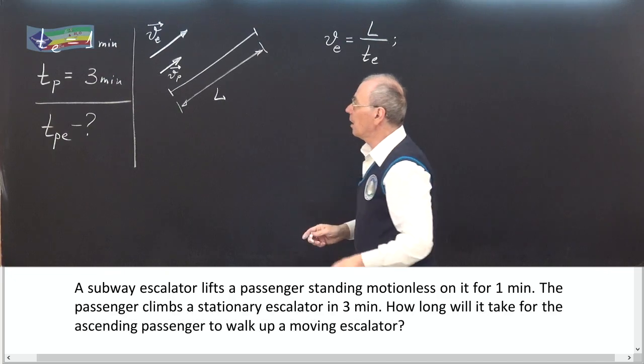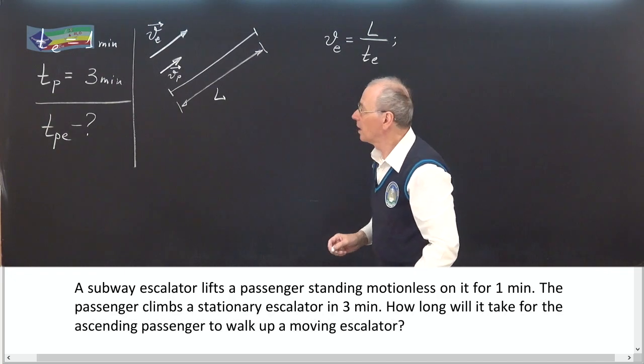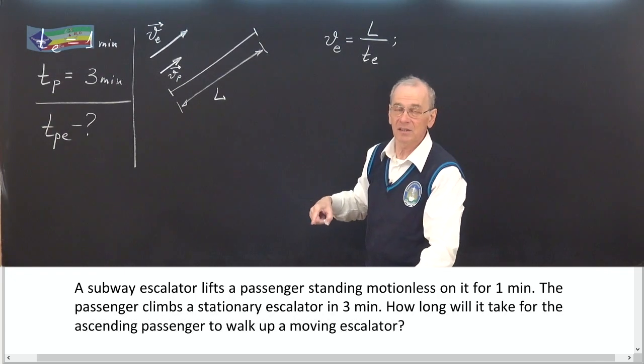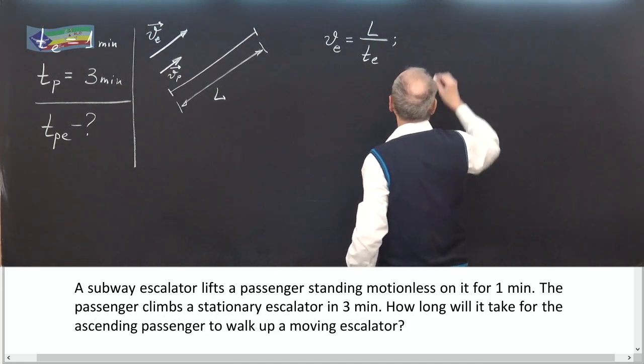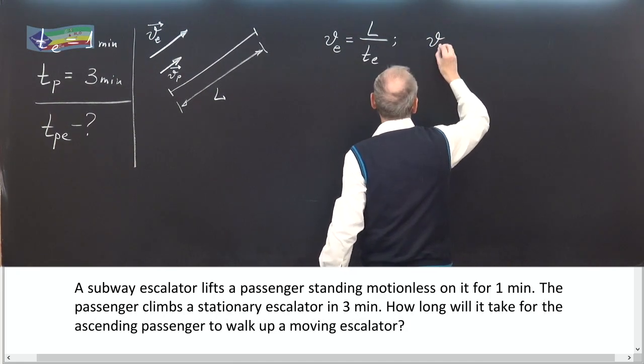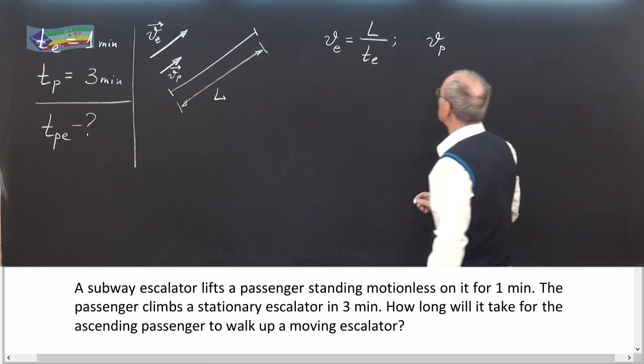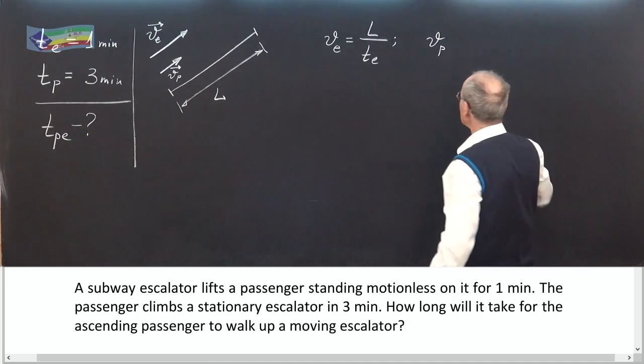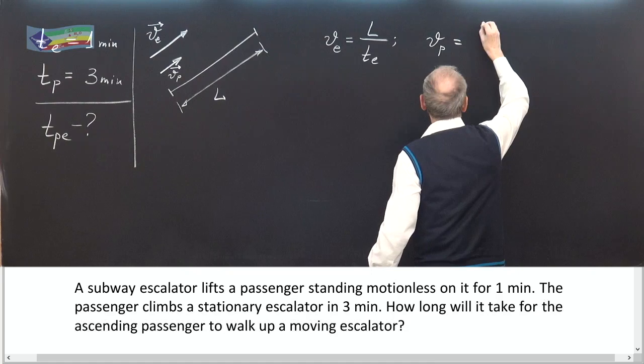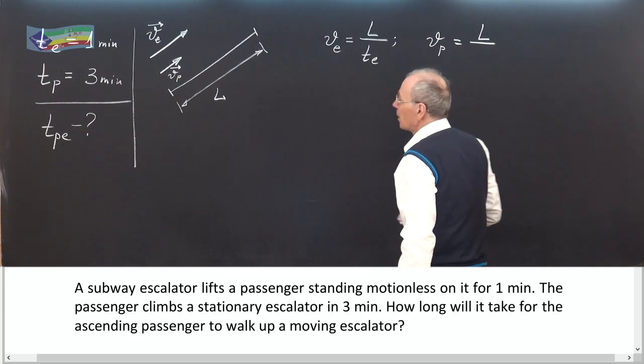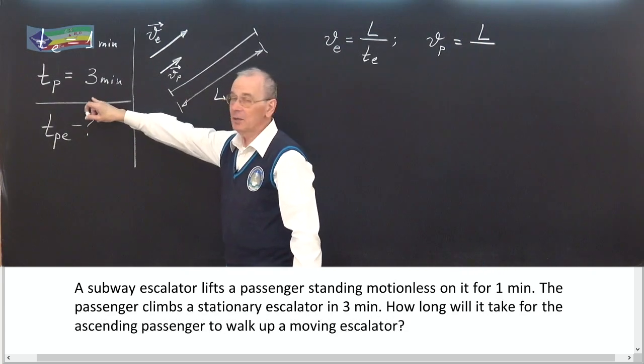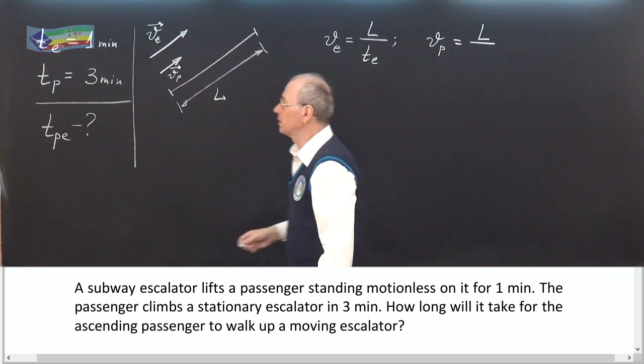When only passenger works and escalator is idle, Vp, speed of the passenger equals the same length divided by time taken for the passenger to ascend the escalator.